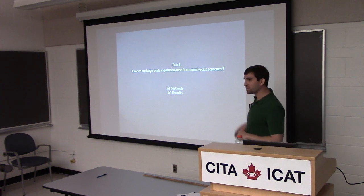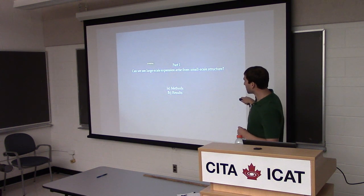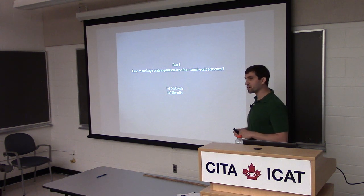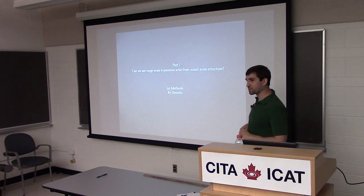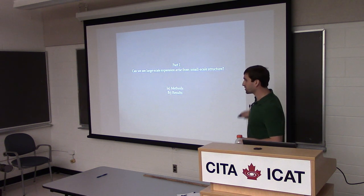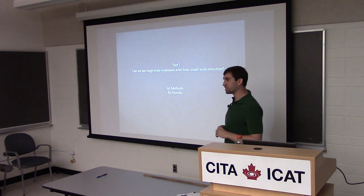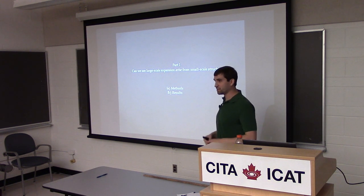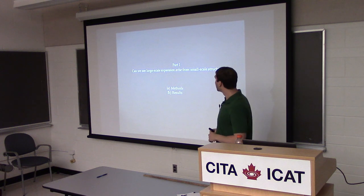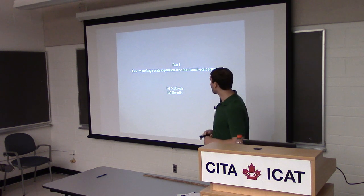This talk is divided into two parts. The first part deals with how we can try to see large-scale expansion arise just by putting initial conditions down, making no other assumptions — essentially numerical relativity simulations and results looking at properties of our spacetime in these sims. The second part of the talk will be focused on observables: we can compute the metric, but ultimately the thing we see in the end will be observable quantities.